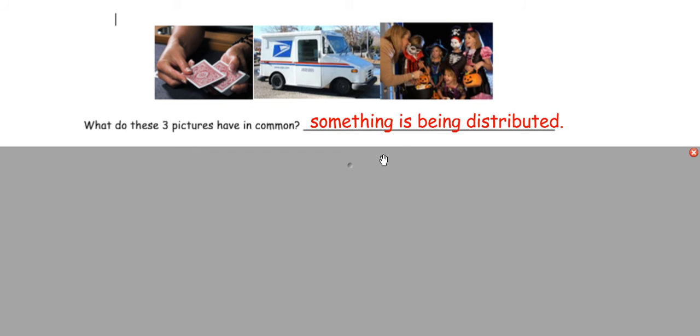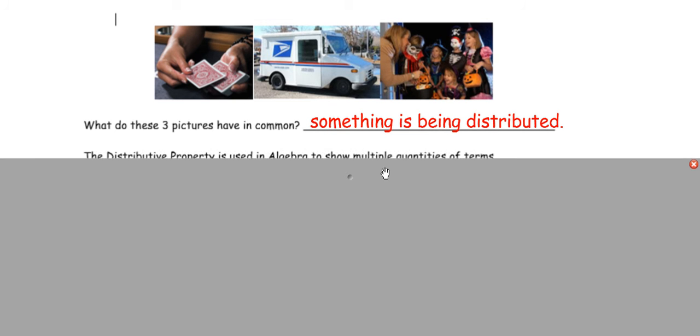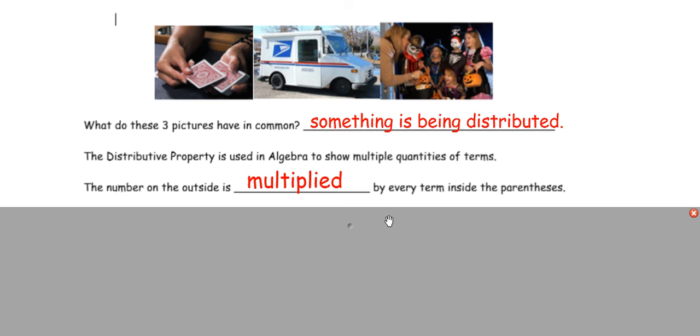So here we have three pictures. We have someone dealing a deck of cards, a mail carrier delivering mail, and someone giving out candy on Halloween. What do these three pictures have in common? Well, in each picture, something is being distributed. The distributive property is used in algebra to show multiple quantities of terms. The number on the outside is multiplied by every term inside the parentheses.